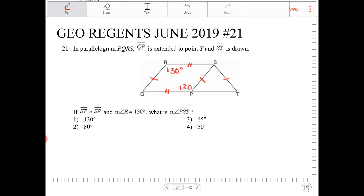If angle QPS is 130, and QPT is a straight line, then the angle to the right of it is going to be supplementary. These will form a linear pair. So I will have 50 degrees over here.